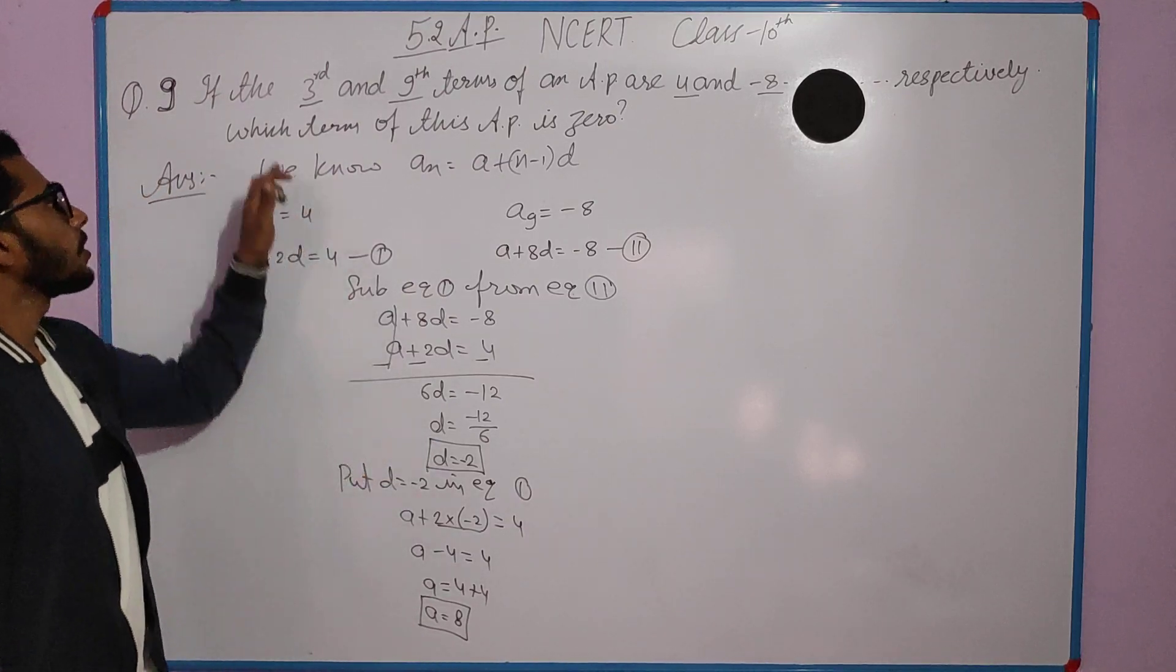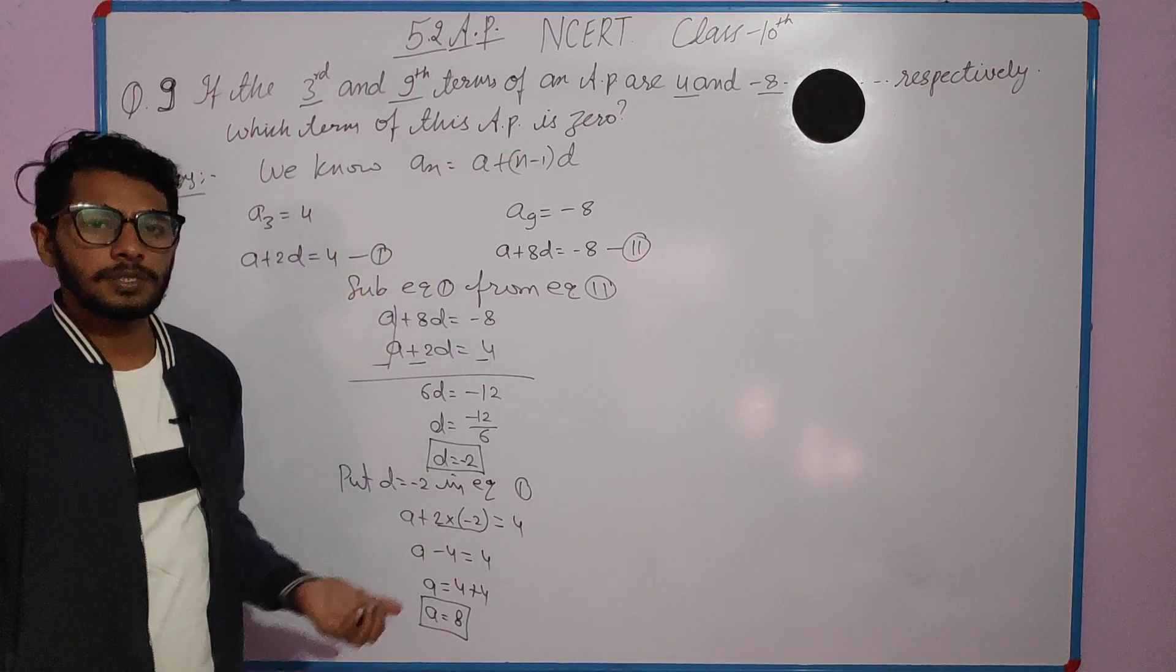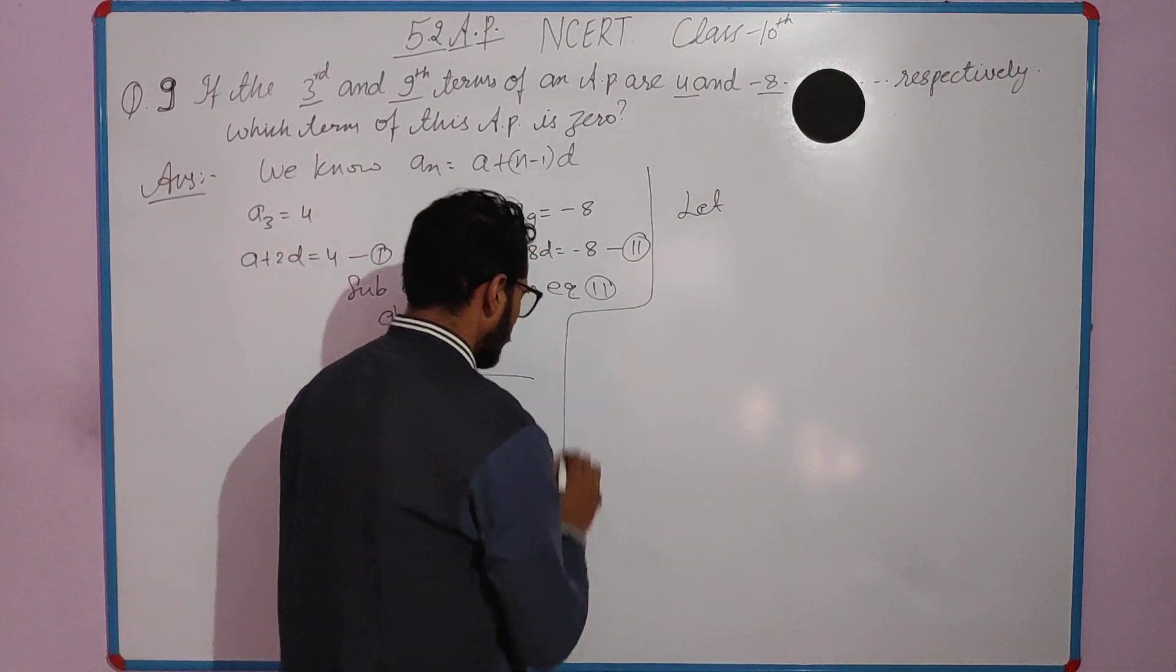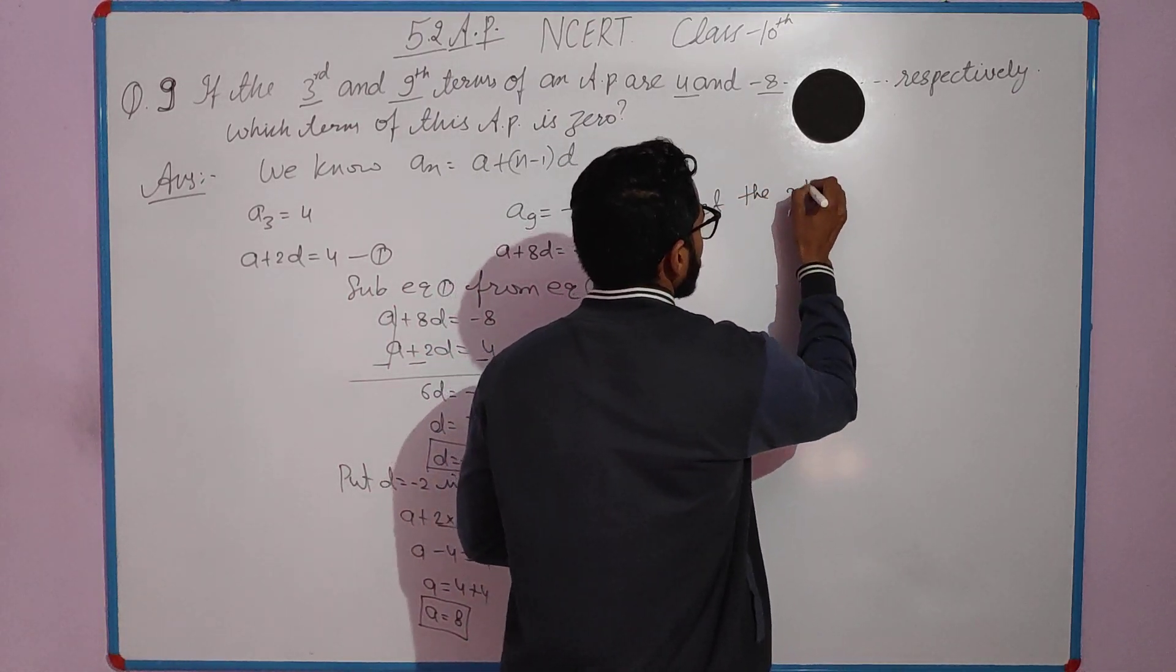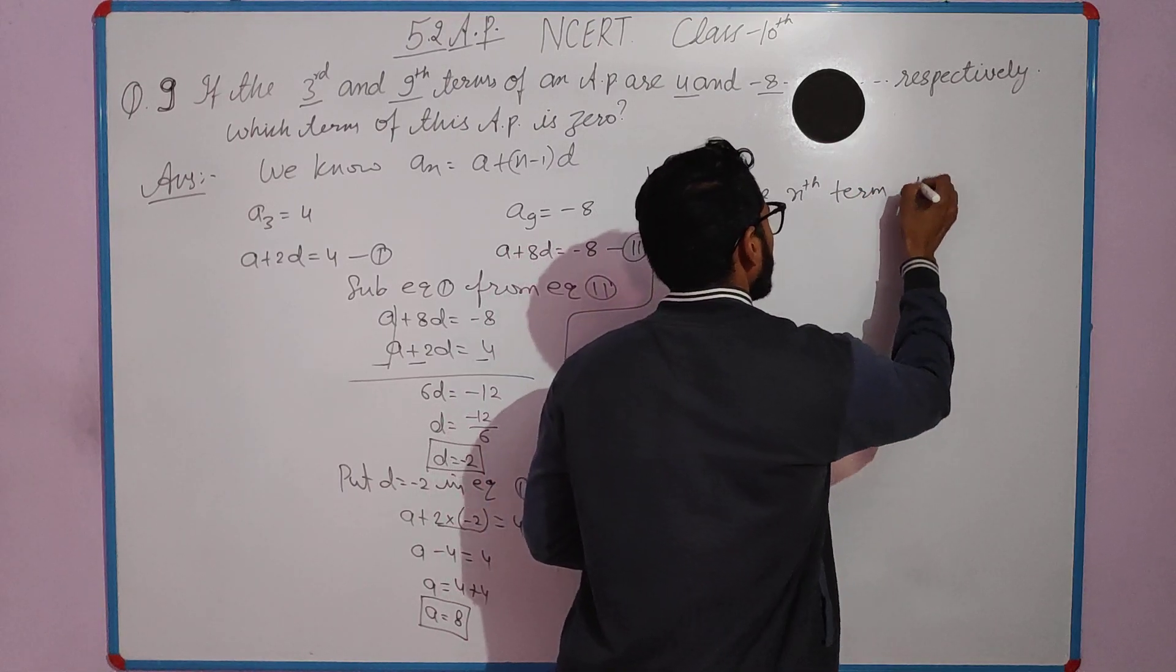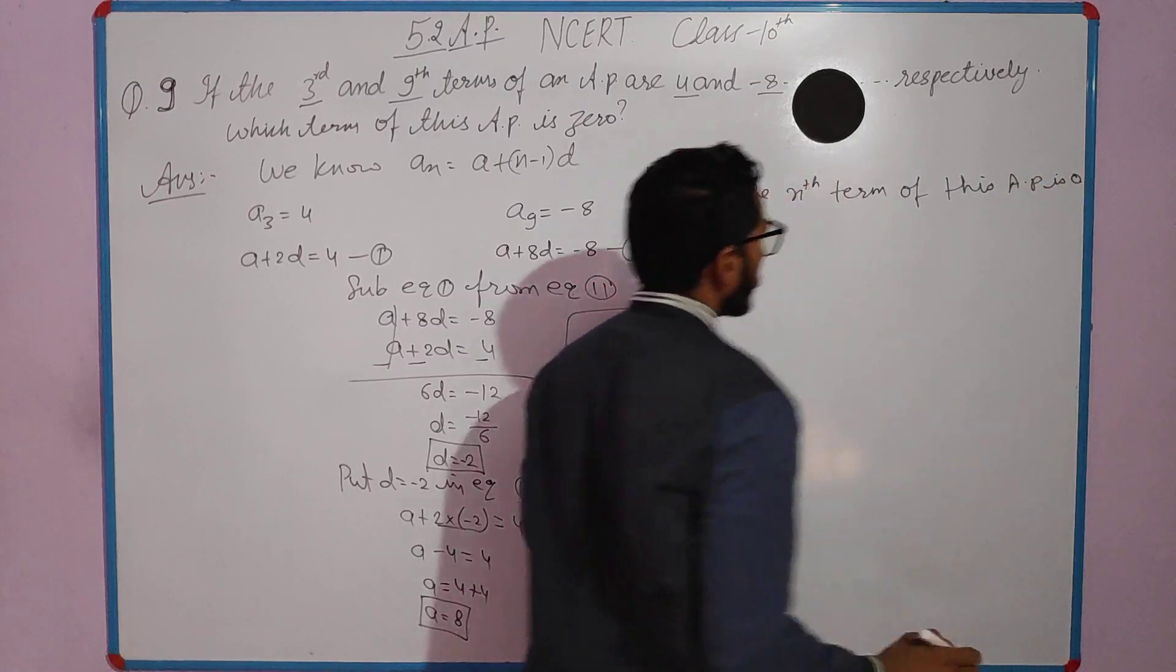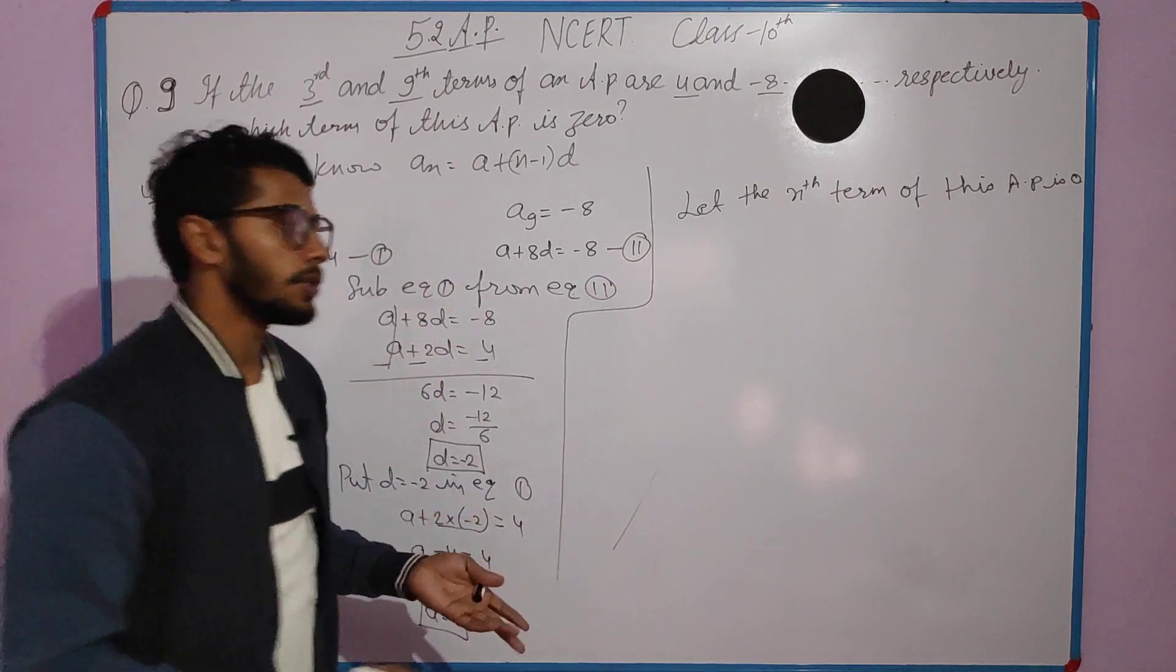Now we need to find which term of this AP is 0. Let's assume that the nth term of this AP is 0.